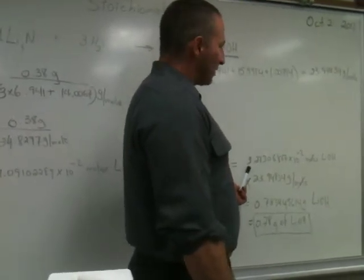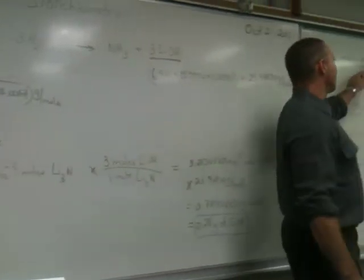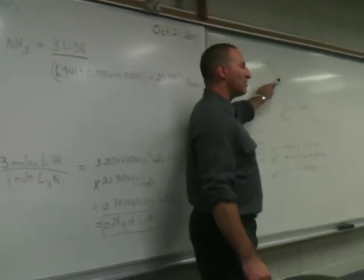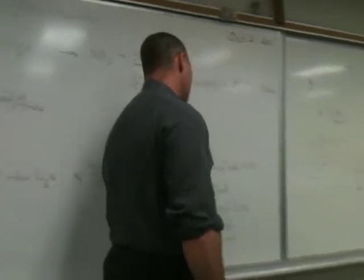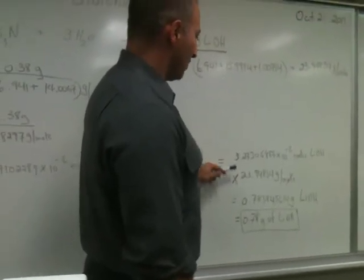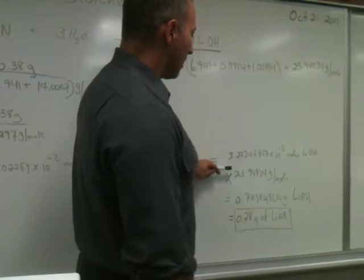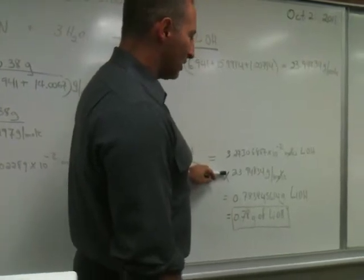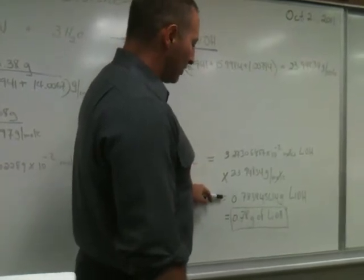But we haven't finished the problem because we're only here now. We have moles of lithium hydroxide. But we want to have grams of lithium hydroxide. How do we find that out? We multiply by the molar mass of lithium hydroxide. Moles of lithium hydroxide times molar mass of lithium hydroxide gives you grams of lithium hydroxide.